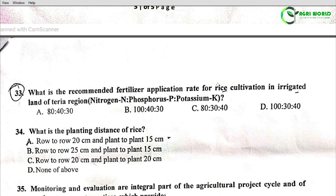Question 33: What is the recommended fertilizer application rate for rice cultivation in irrigated land of the Terai region (NPK)? Options: A - 80:40:30; B - 100:40:30; C - 80:30:40; D - 100:30:40. According to new data, the recommended NPK rate is 120:40:40. However, options B or D may also be considered correct. According to old data, the recommended rate is 100:30:30, so B or D could be applicable.